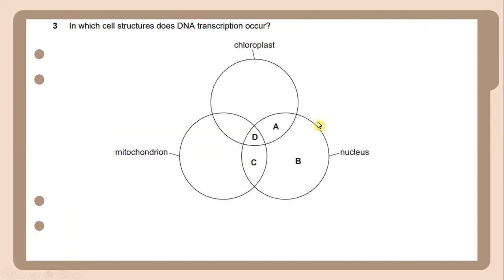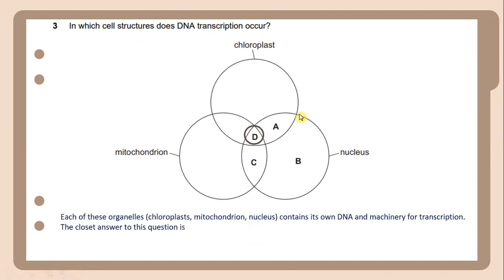In which cell structure does DNA transcription occur? Each of these organelles, chloroplast, mitochondria, and nucleus, contains its own DNA and machinery for transcription. And the closest answer to this question is B.